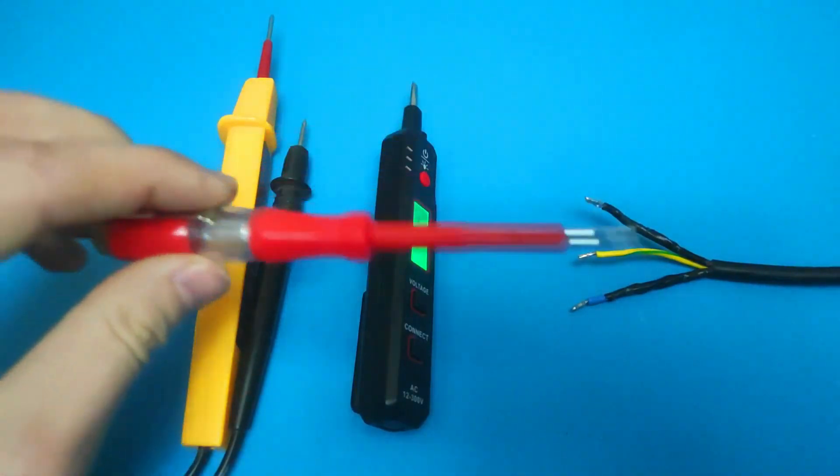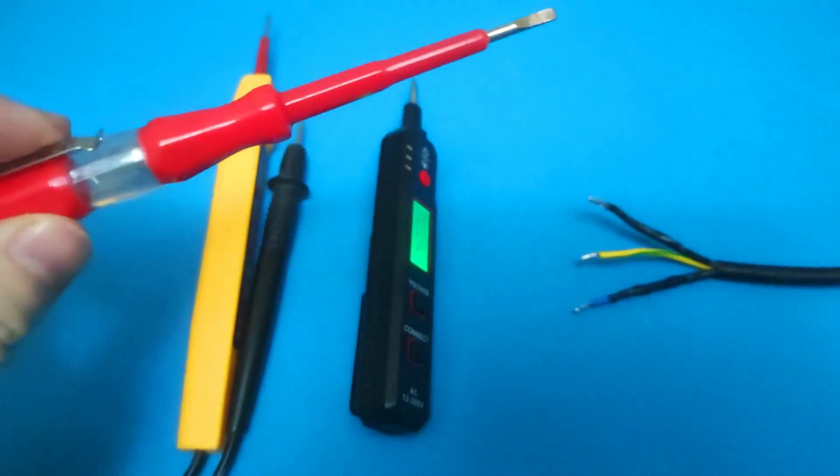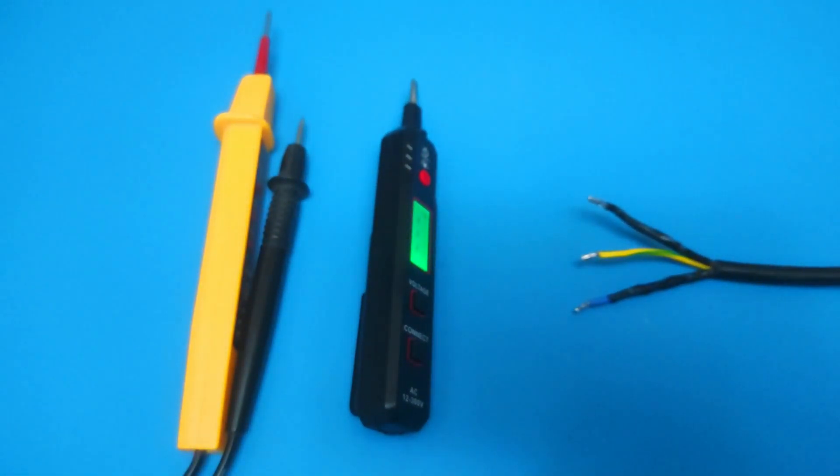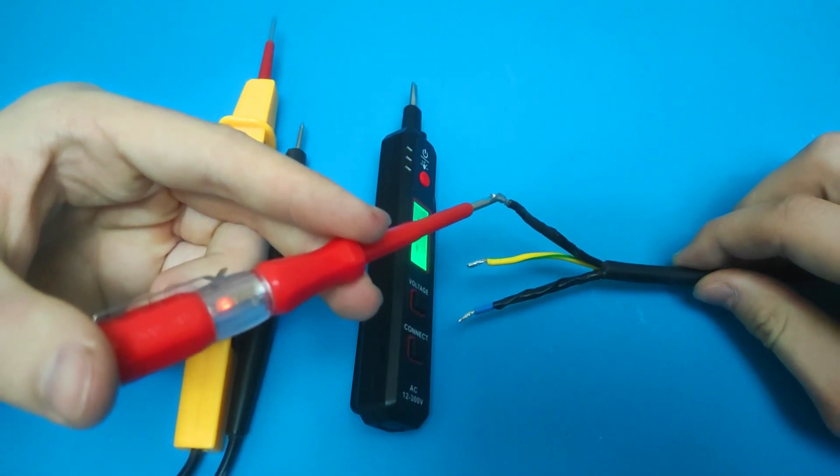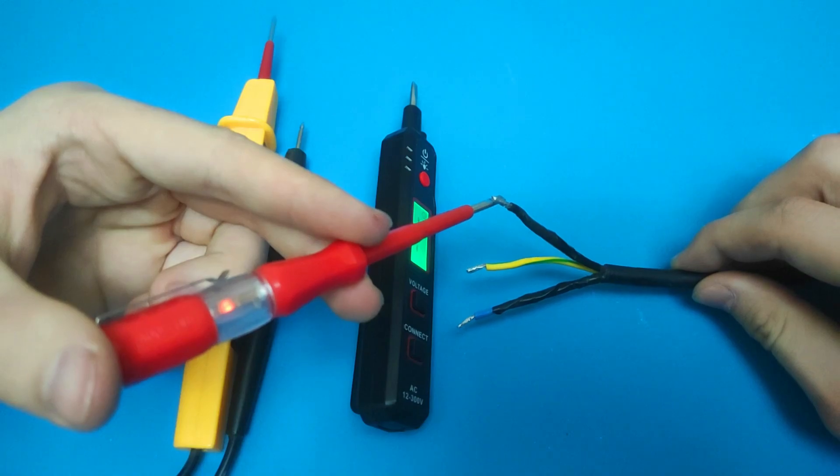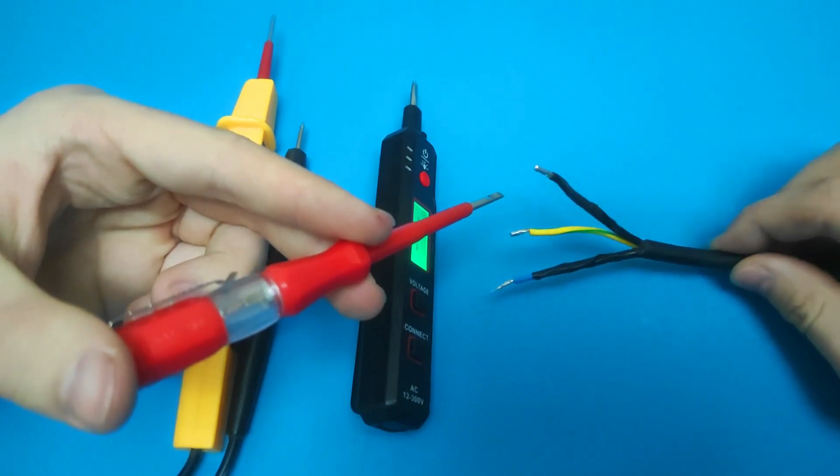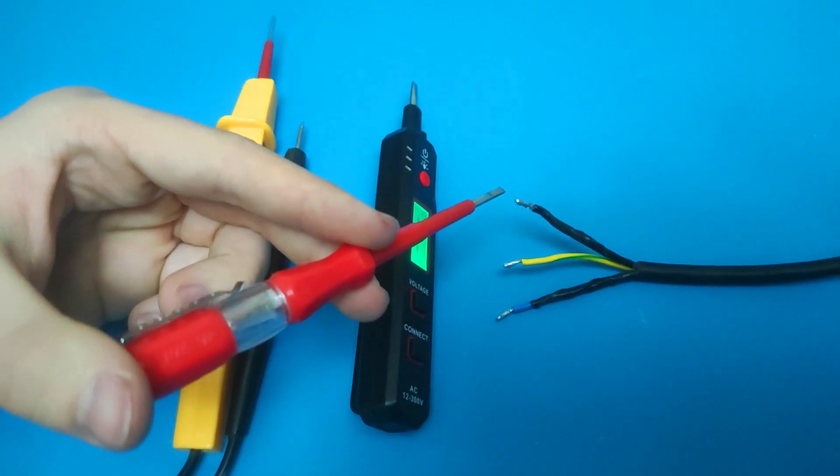With the first type, you can only check the presence of voltage. By touching the wire you can see if the diode lights up, if it lights up then there is voltage. It works fine, but we don't know what the voltage is.